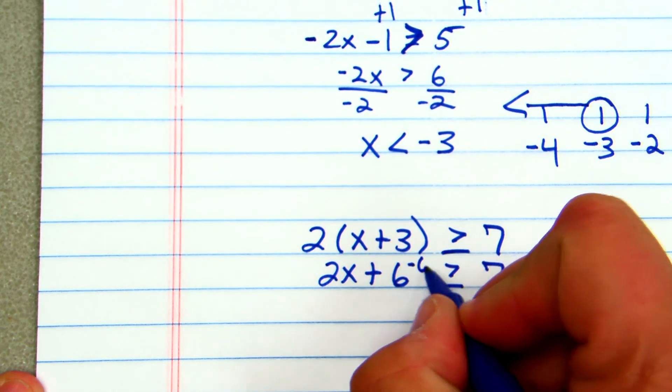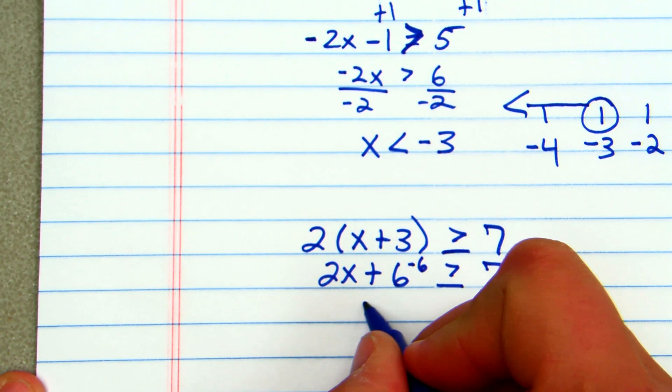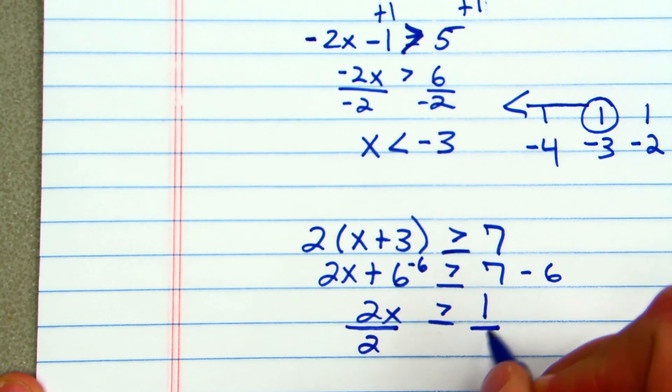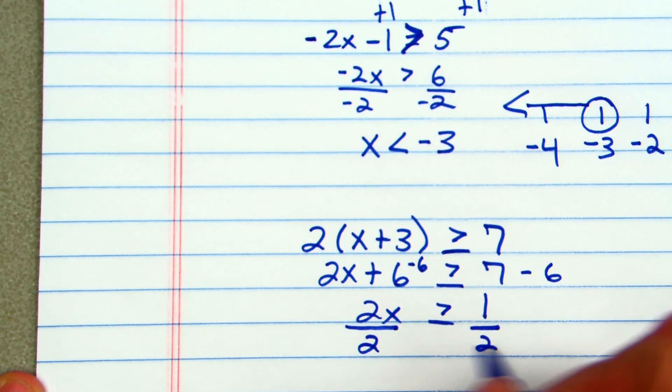I'll now subtract 6 from both sides. 2x is greater than or equal to 1. I'll divide both sides by 2. I will not change the direction of my sign because 2 is positive. x is greater than or equal to 0.5.